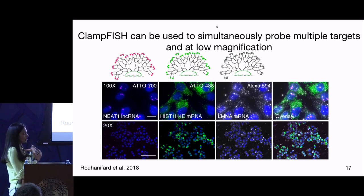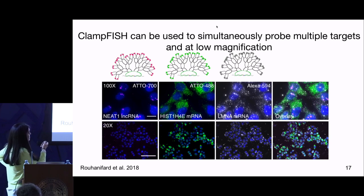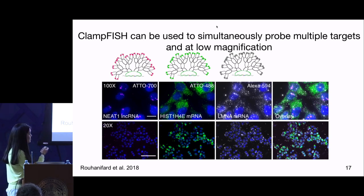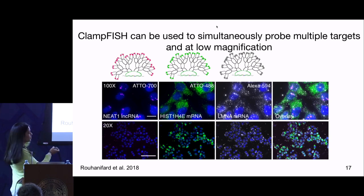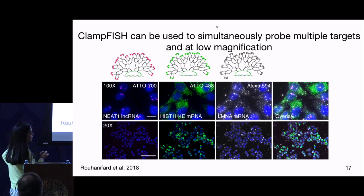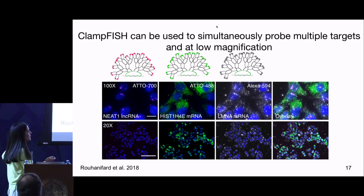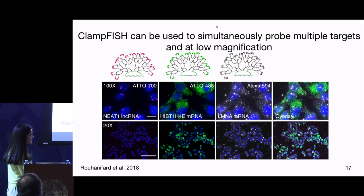The ability to multiplex is really important here, and this is one of the strengths of the protocol — you can multiplex and amplify at the same time. You design primary probes with different backbones, then design secondary and tertiary probes complementary just to that specific backbone. You can theoretically go as high as you want since you can program the backbone to whatever you want, as long as you have unique amplifiers for each. What I'm showing here is three targets: NEAT1 lncRNA, expected in nuclear paraspeckles; HIST1H4E, a marker of S-phase expected in about 60% of cells; and LMNA, a housekeeping gene expected positive in all cells. We overlaid all of them together and could do it at low magnification.